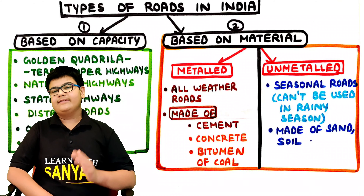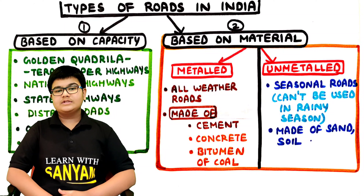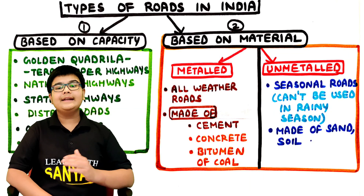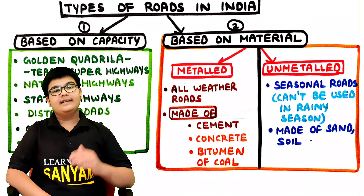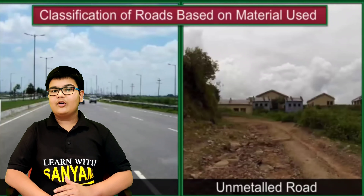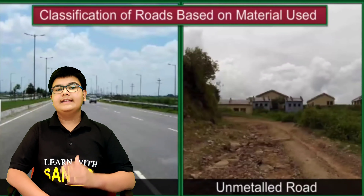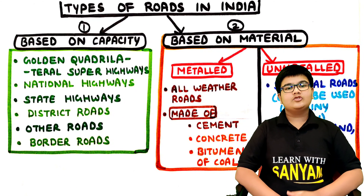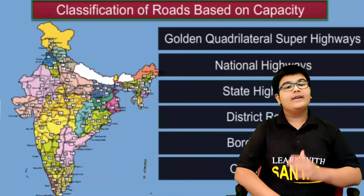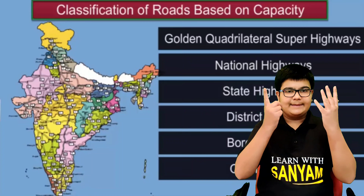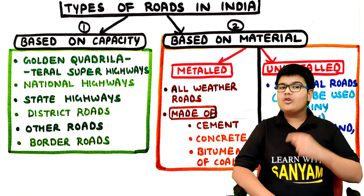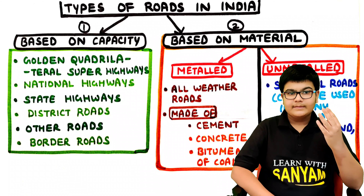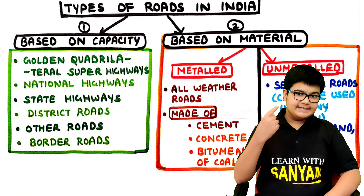On the basis of material, we have metalled and unmetalled roads. Metalled roads are all-weather roads made up of cement, concrete, bitumen or coal — these are pakka roads. Unmetalled roads are seasonal roads that can't be used in the rainy season; they are made up of soil, sand, mud, etc. — these are kacha roads. On the basis of capacity, there are six types of roads: first, the Golden Quadrilateral Super Highways; second, national highways; third, state highways; fourth, district roads; fifth, other roads; and sixth, border roads.